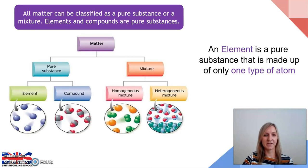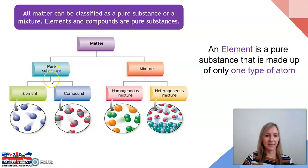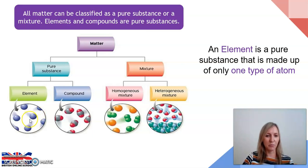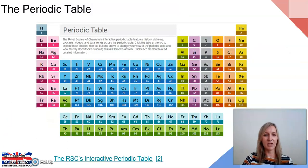From our previous work in science, we should know that all matter can be classified as a pure substance or as a mixture. We're going to be focusing on pure substances in this lesson because we are going to be looking at elements. If we look at the flow diagram here, pure substances can be divided into elements and compounds, and elements by their definition are substances that are made up of only one type of atom. The atom can be in single atoms or in pairs or more atoms joined together, but the key point is that as a pure substance, they are made up of only one type of atom.